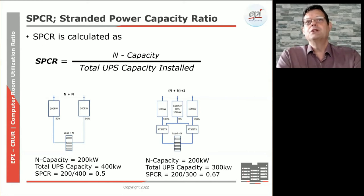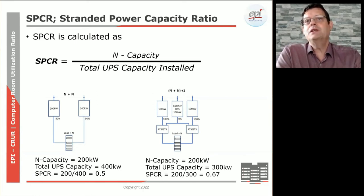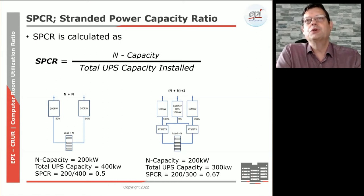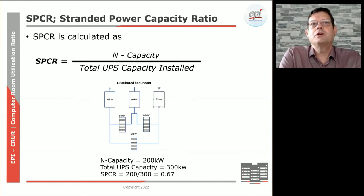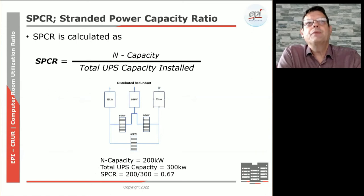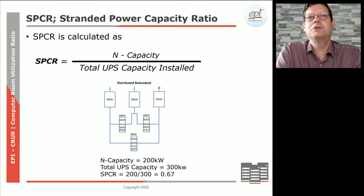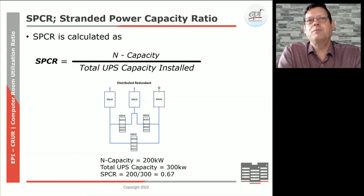In a catcher scenario, we still have an N capacity of 200, but with a different redundancy setup we can reduce the total capacity installed, leading to a higher SPCR ratio. We could also have a distributed redundant system where — instead of N plus N — we virtually distribute the load over various UPSs, and again achieve a higher SPCR ratio. For a mixed commercial data center environment with different floors and different UPSs allocated to different areas, you need to do a calculation for each particular area, then add those numbers up and average them out.